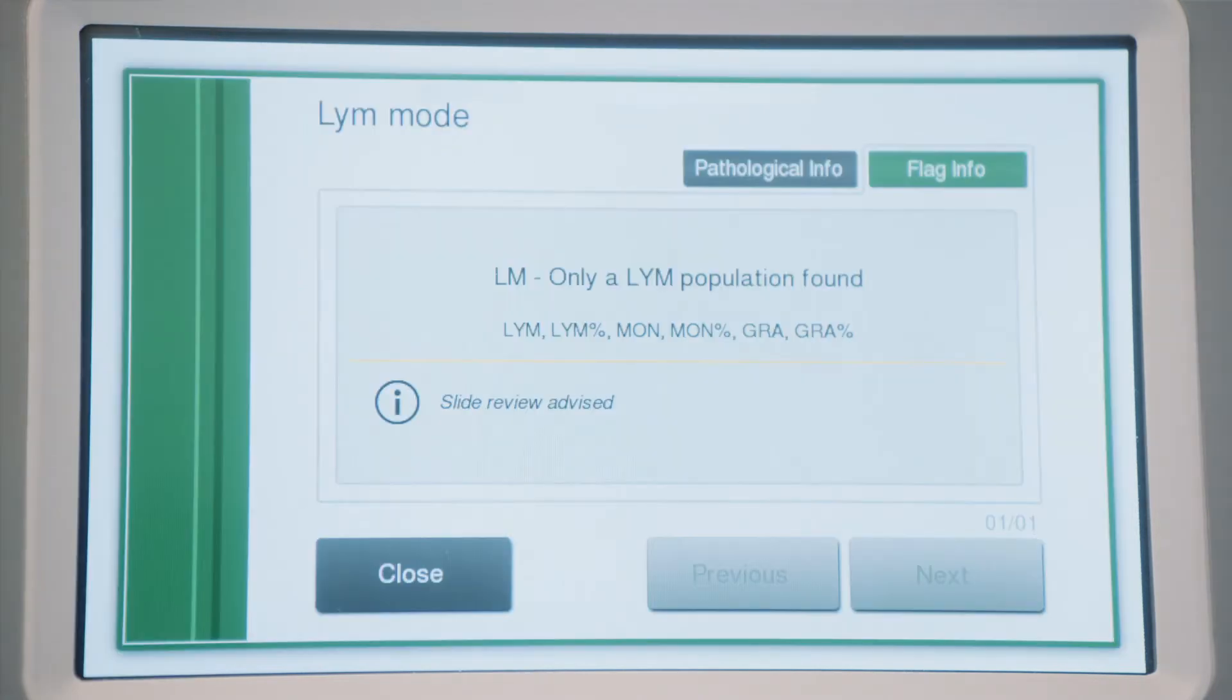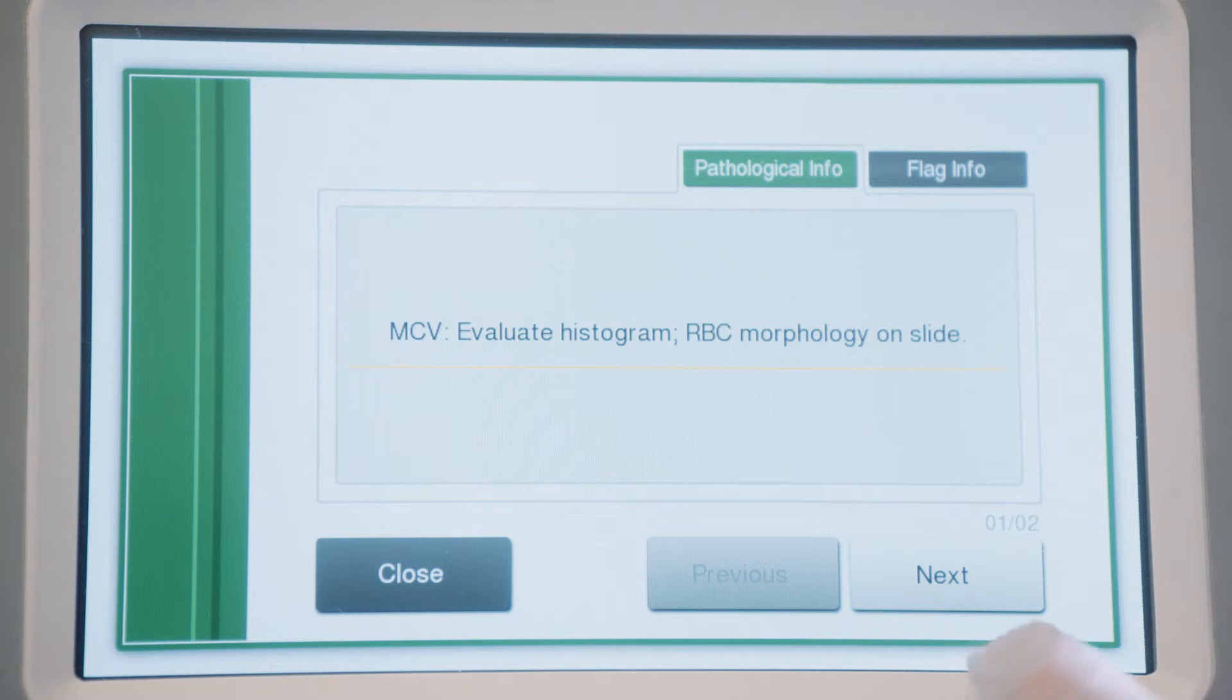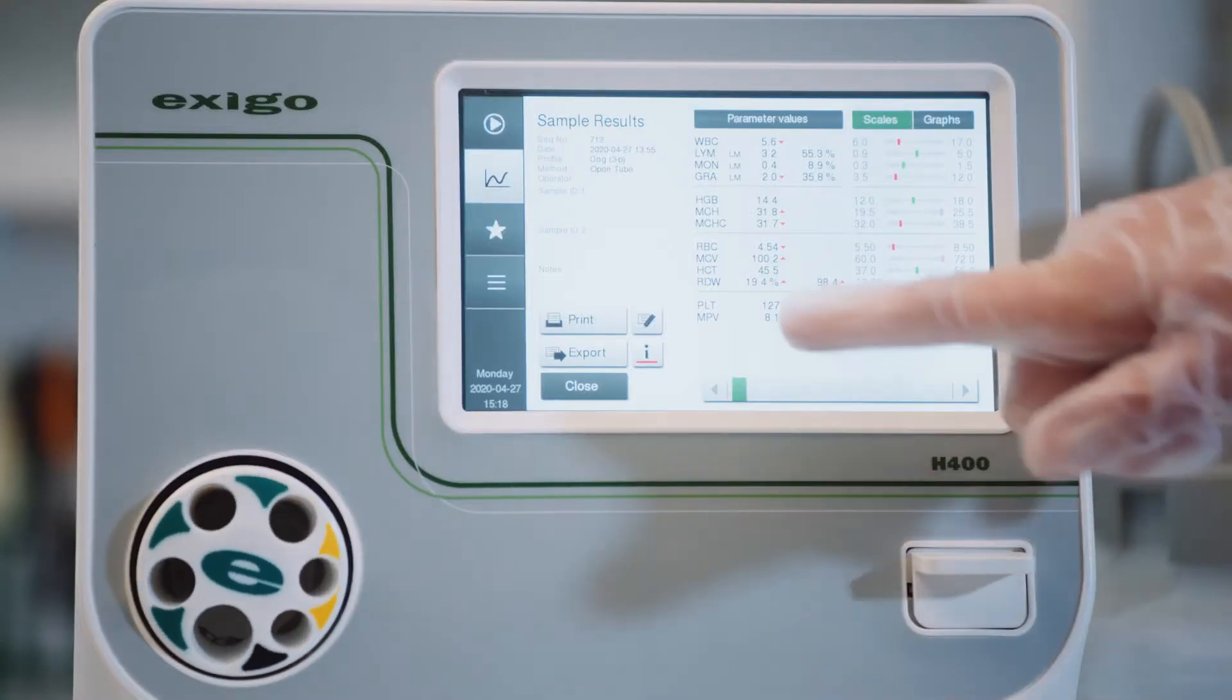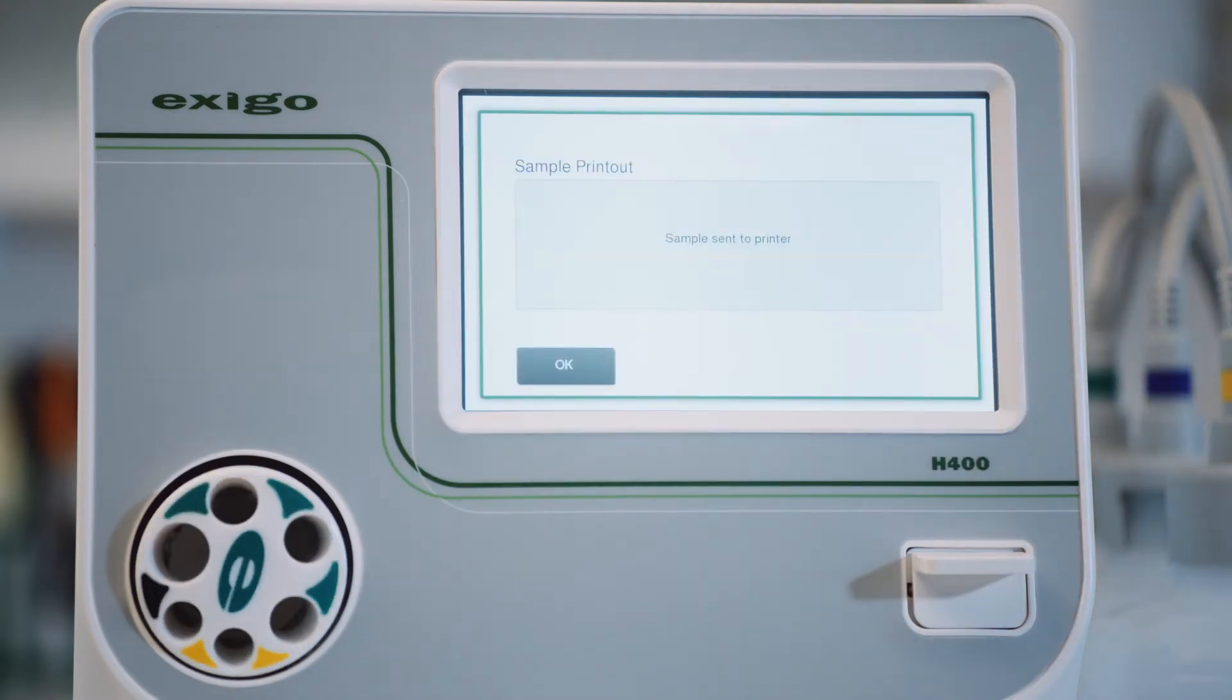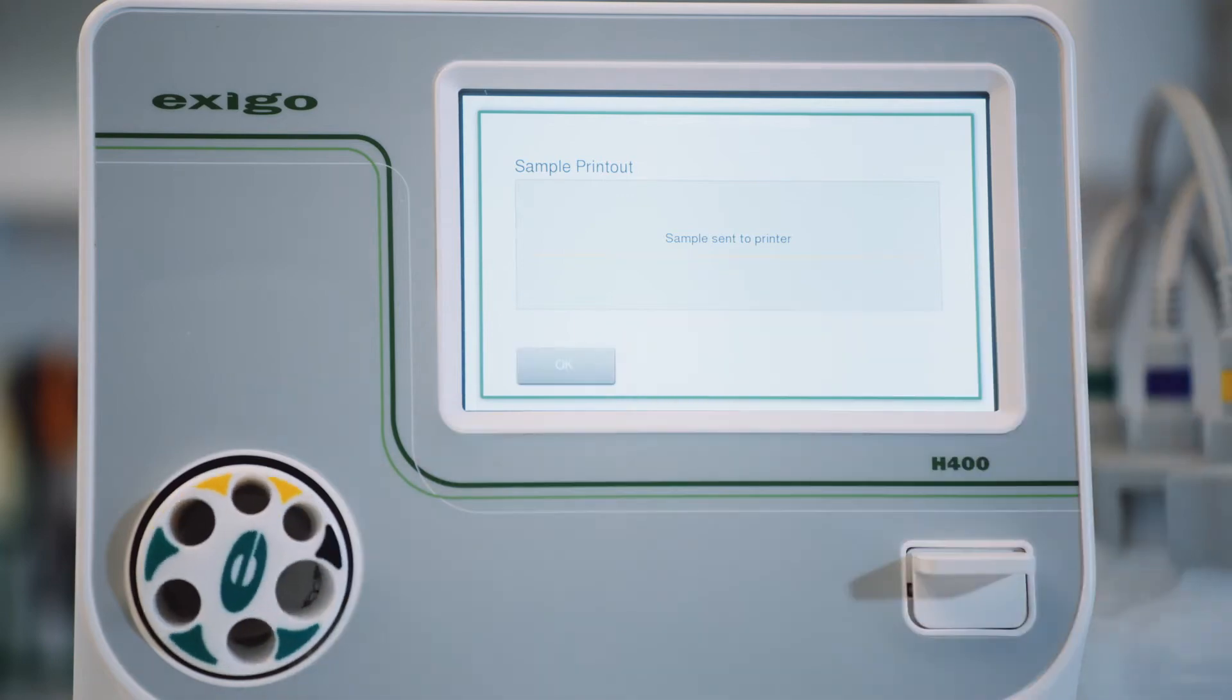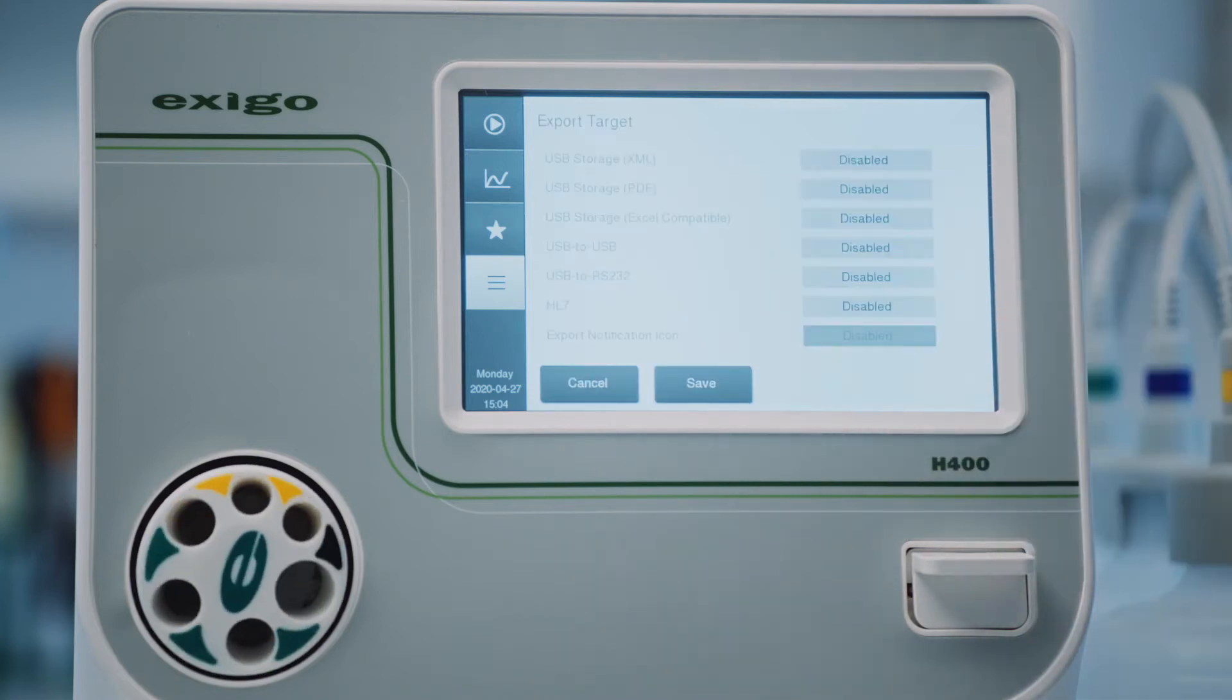Exego H400 also helps the veterinarian through pathological information flagging. Printouts are fully customizable as well, and cover any or all of the parameters, flags, and notes you choose to display. Better connectivity and improved communication protocols are also key features of Exego H400.